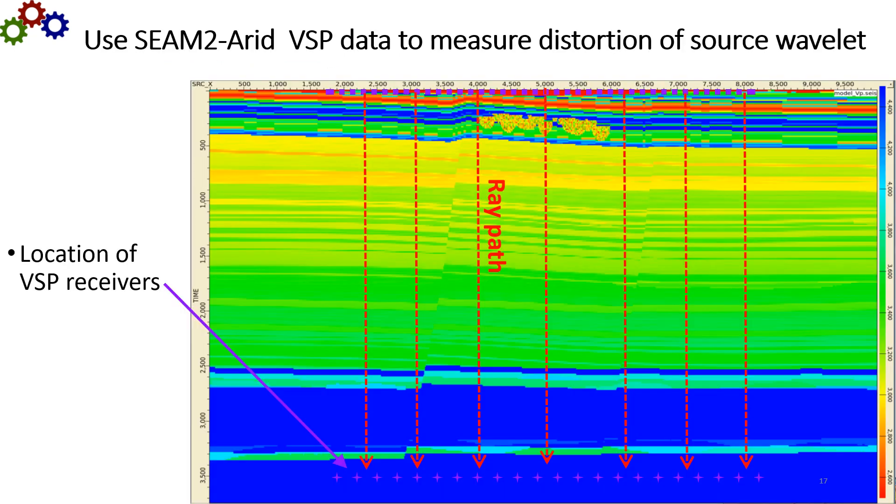We can measure the distortion of the source wavelet using the SEAM2-Arid VSP data. We have some surface sources and since this is synthetic data, we are going to have perfect sources, no vibrator variability. And we are going to place a receiver directly below each source. So we are going to look only at vertical ray paths and we are going to place them below all reflectors. Now there will be some interbed multiples here, but the interbed multiples are going to be weak and a second order effect compared to the surface scattering.